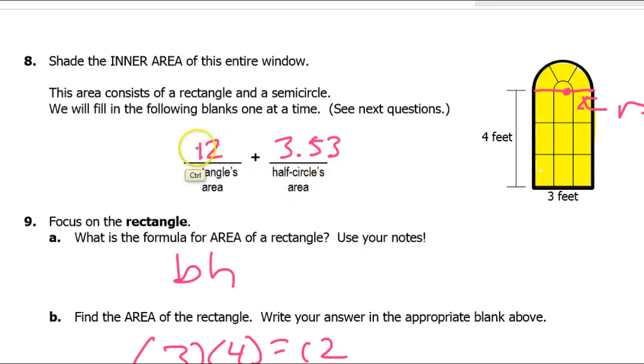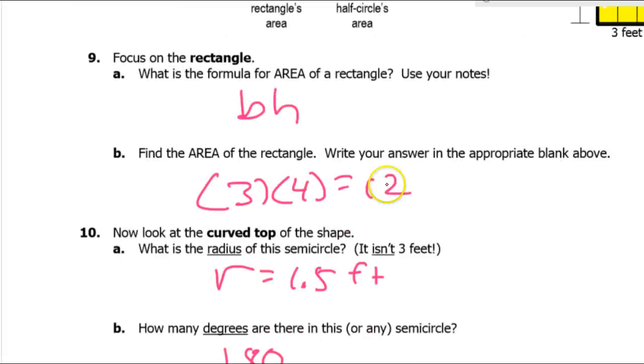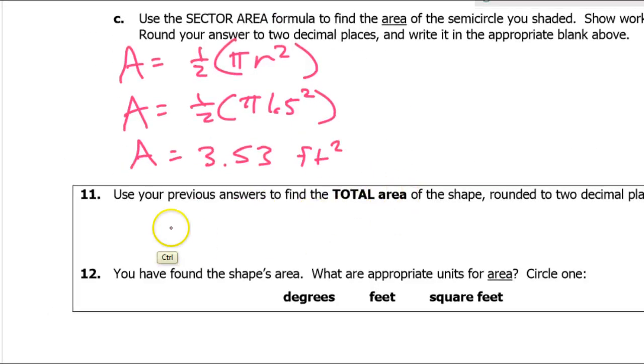So if I add those up, that's going to give me fifteen point five three. So the total area is fifteen point five three. And this is going to be square feet.